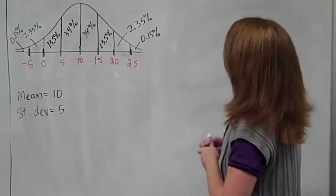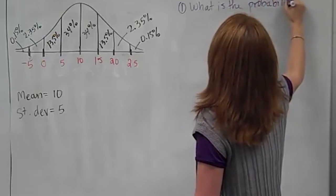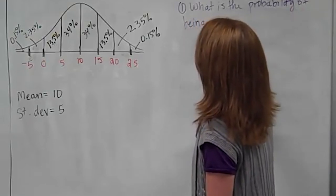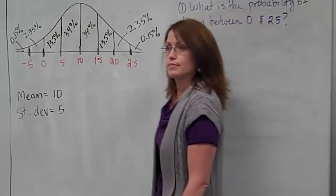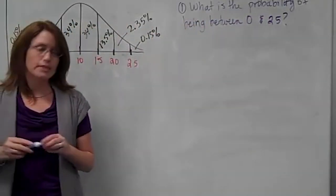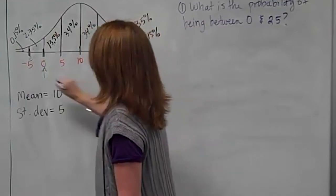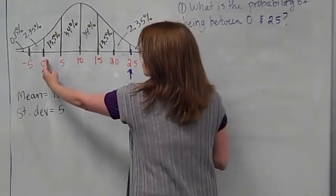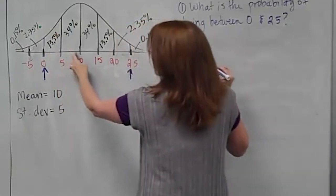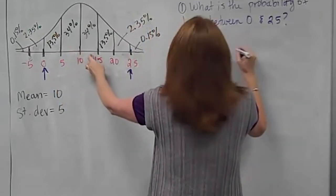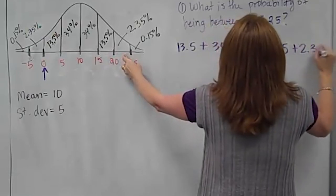Now I can start asking questions. For example: what is the probability of being between 0 and 25? Here's 0 and here's 25. I want anything from here up to here — covering the 13.5% section, the 34% section, the 34% section, the 13.5% section, and the 2.35% section. Adding those together gives 97.35%.